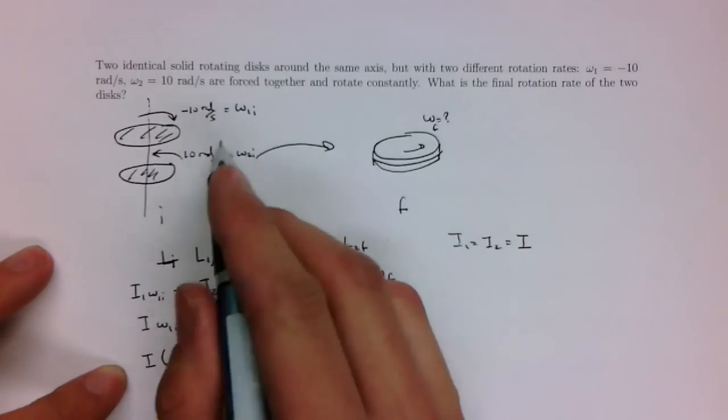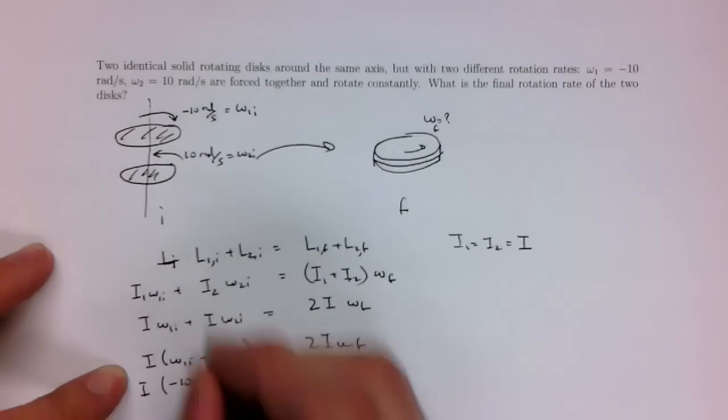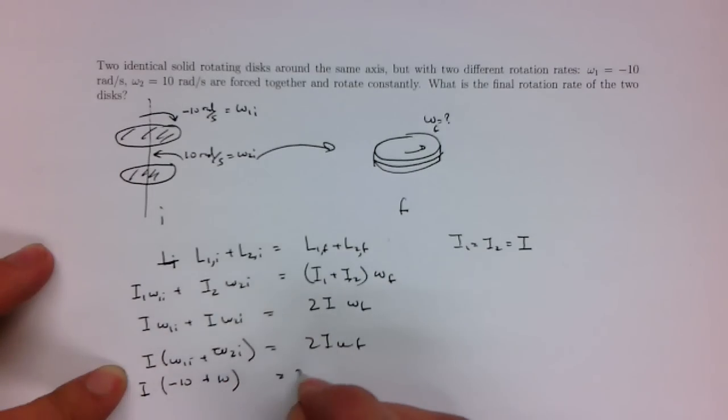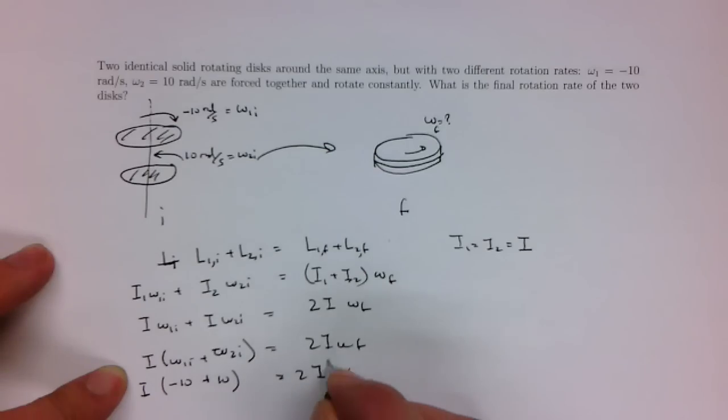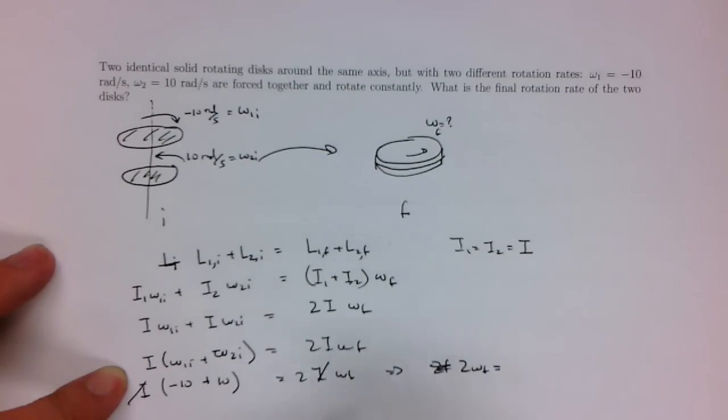Okay, let's plug in omega 1. So, this one is going to be minus 10 times I plus 10 is equal to 2I omega final. I's cancel out. I get 2 omega F is equal to what?